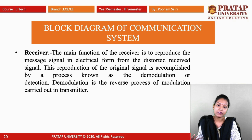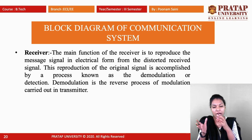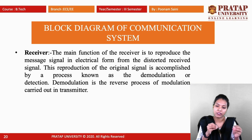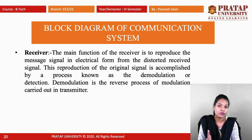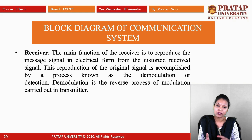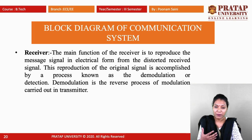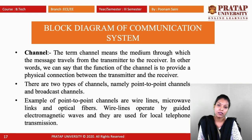At the receiver, we need the original signal. The main function of the receiver is to reproduce the message signal in electrical form from the distorted received signal. This reproduction process is known as demodulation. At the transmitter, modulation superimposed the message signal with a high-frequency carrier signal, but at the receiver we demodulate the signal, and after the demodulation process the original signal is produced at the receiver end.